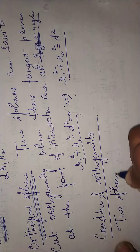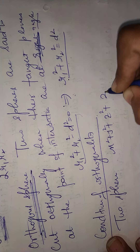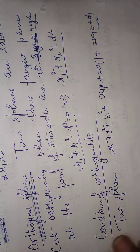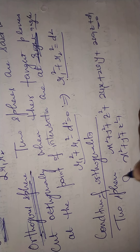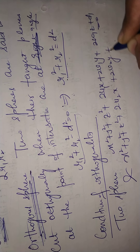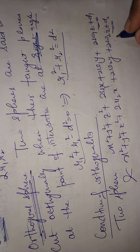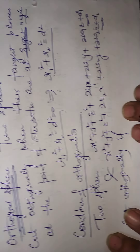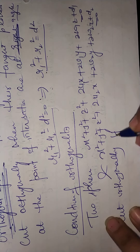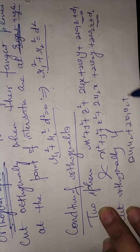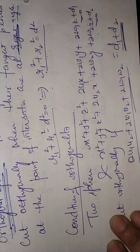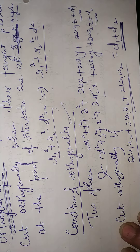There are two spheres: x² + y² + z² + 2u₁x + 2v₁y + 2w₁z + d₁ = 0 and x² + y² + z² + 2u₂x + 2v₂y + 2w₂z + d₂ = 0. These two spheres cut orthogonally if 2u₁u₂ + 2v₁v₂ + 2w₁w₂ = d₁ + d₂. This orthogonality condition is very important.